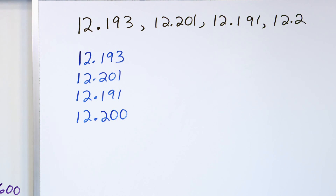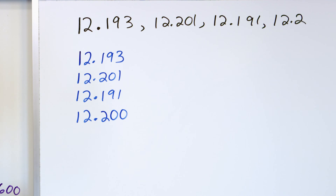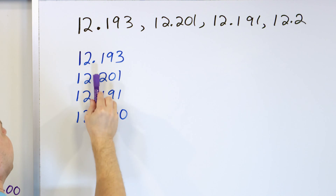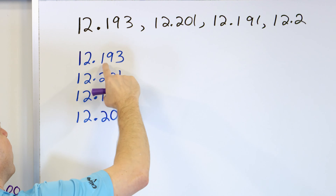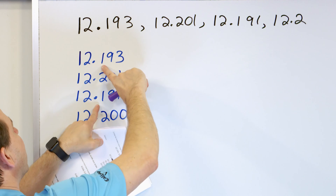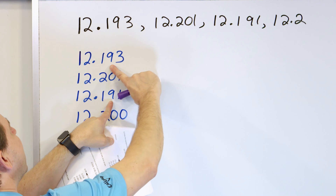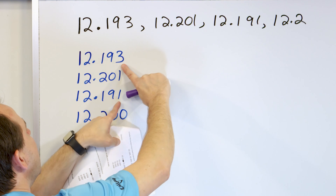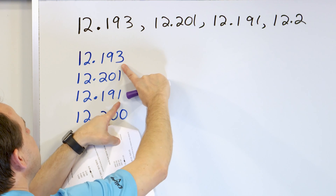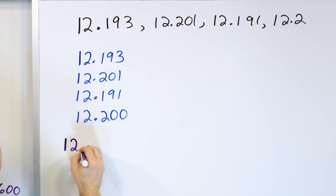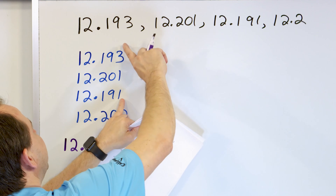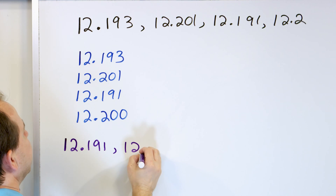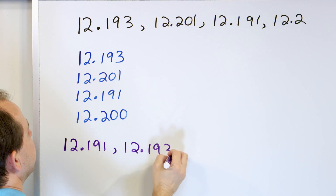Now we start comparing. We look at the whole numbers — they're all 12, so they're tied. We look at the tenths place: two of them have 1 and two have 2. For the ones with 1 in the tenths, we look next door and find 9 in both. So we look at the hundredths: one has 1 and the other has 9. Of these two, 1 is the smallest — so 12.191 is the smallest. Then, because the tiebreaker was the hundredths, 3 comes next: 12.193.